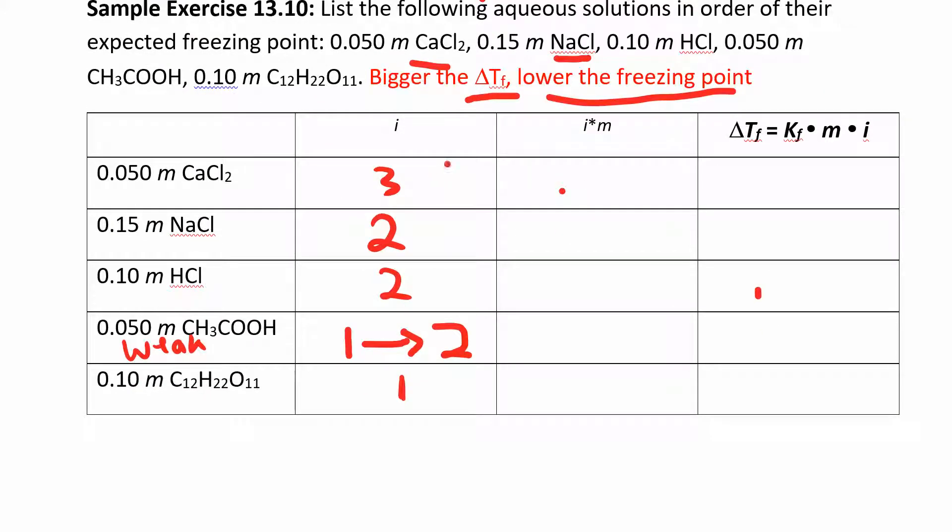All right, so now all I want to do is multiply the van't Hoff factor by the molality. And have that done here. So this guy, so you can do that. So just three times 0.05 is 0.15, 0.30, 0.20. And then this one is either going to be 0.05 all the way up to 0.1. And then this one will be 0.1.